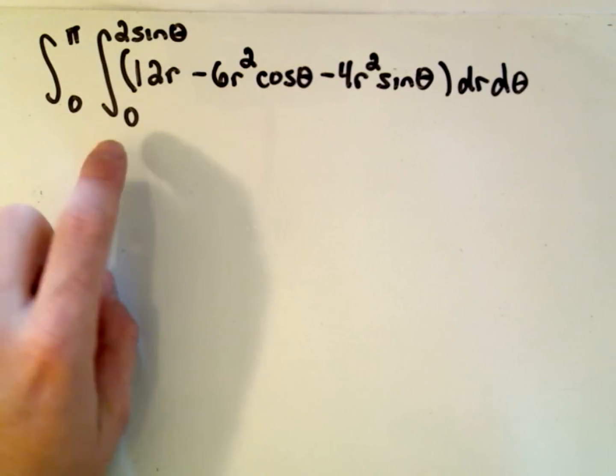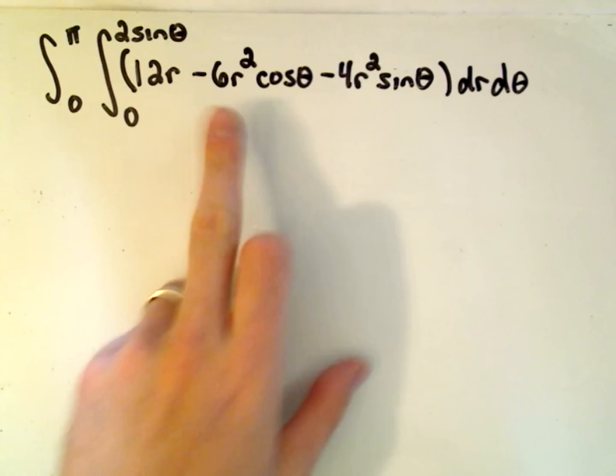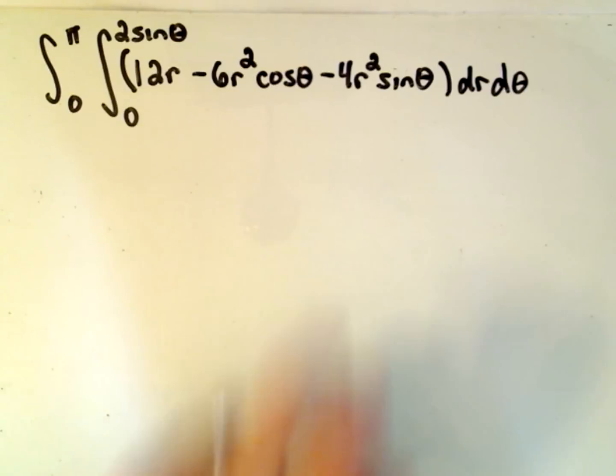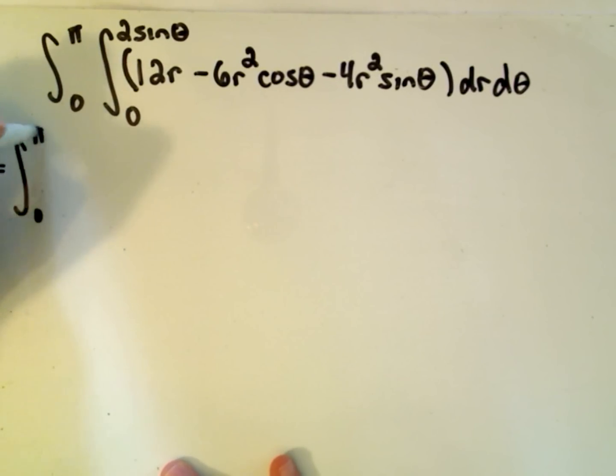So, we're integrating from 0 to π, and then 0 to 2sinθ, 12r minus 6r²cosθ minus 4r²sinθ, with respect to r and with respect to θ. So, just pretty tedious from here. Hopefully I'll be careful with my arithmetic.